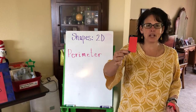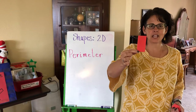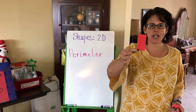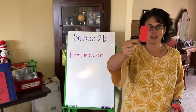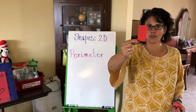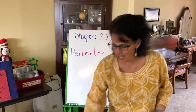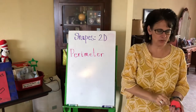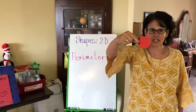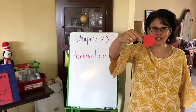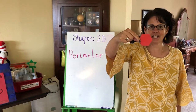Remember, not every side of a triangle has to be equal. We also said that if you stretch a square out, you get the rectangle — with four vertices and four sides, but not all of their sides have to be equal.